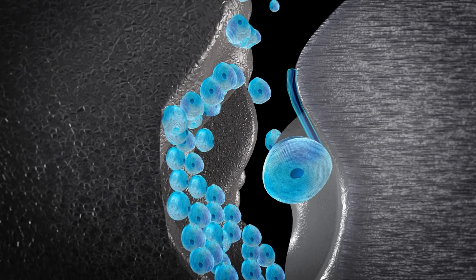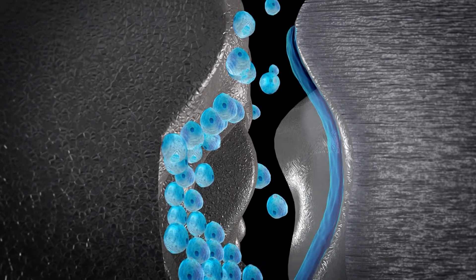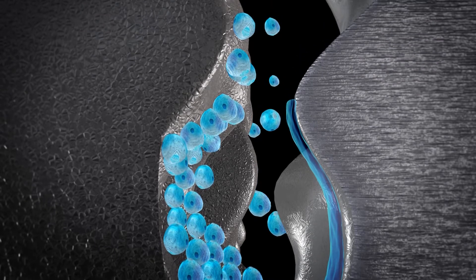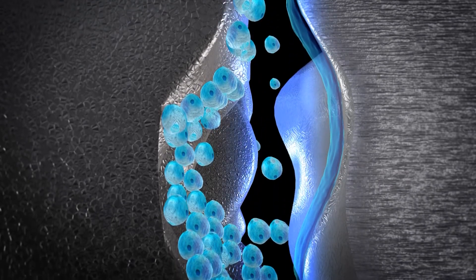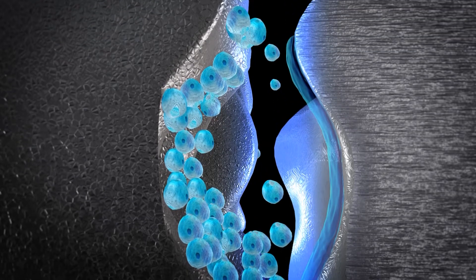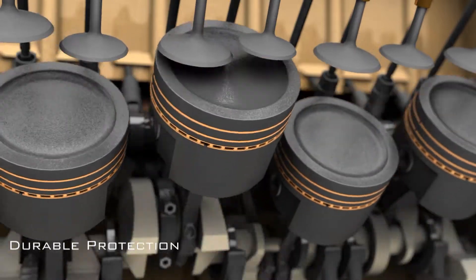At the same time, contact pressure causes these nanospheres to exfoliate their outer layers, releasing tribofilms that attach to surface asperities. The exfoliated tribofilms bind and smoothen worn metal surfaces, resulting in a lasting surface reconditioning effect and provide the metal with durable protection against wear.